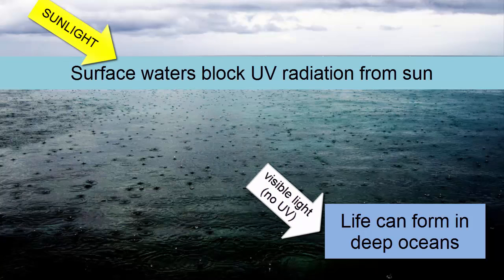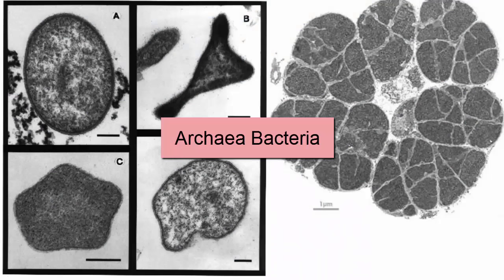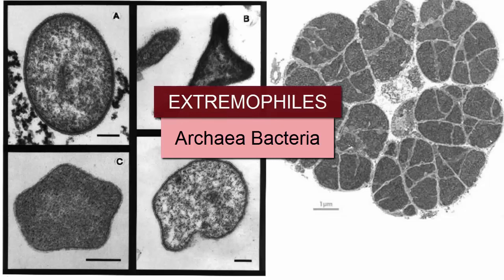What were these first organisms like? The very simplest single-celled bacteria, likely ones that could handle extreme conditions such as high heat and no light, also known as extremophiles.